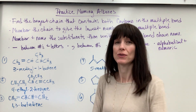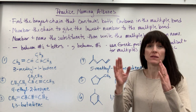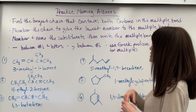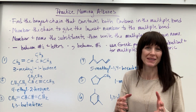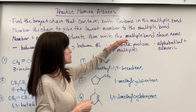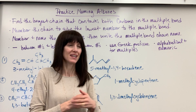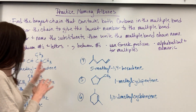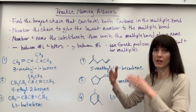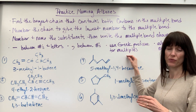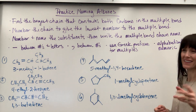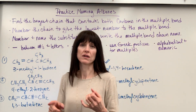Let's practice naming alkenes. I want to go over the rules one more time. First, find the longest chain that contains the carbons in the double bond — the longest chain with the multiple bond. Next, number the chain to give the lowest number to that double bond. After that, number and name the substituents, which are written first, then write the parent chain containing the multiple bond. Reminders: use dashes between numbers and letters, commas between numbers, and Greek prefixes for multiples — for example, two alkenes is called a diene. Always use alphabetical and numeric order.